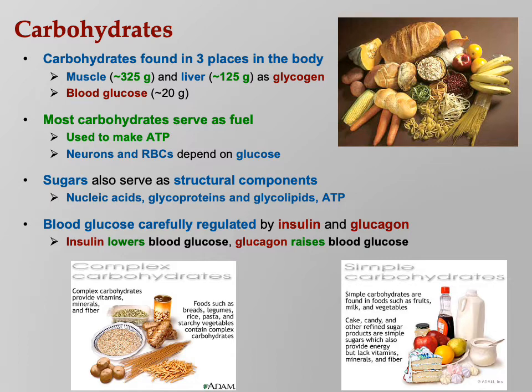Complex carbs are what you want to eat because they contain vitamins, minerals, fiber, and more — that's a rich food source. Pancakes, syrup, candy, and cake are empty calories — they don't have many other nutrients. Fruits are simple sugars but at least they have pectins and other compounds.